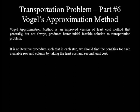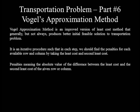It is an iterative procedure such that in each step we find the penalties for each available row and column by taking the least cost and second least cost. The penalty is the absolute value of the difference between the least cost and the second least cost of a given row or column. What makes this method different from the least cost cell method is that it starts by calculating this penalty for each row and column.